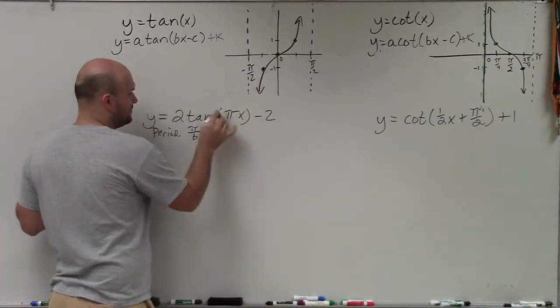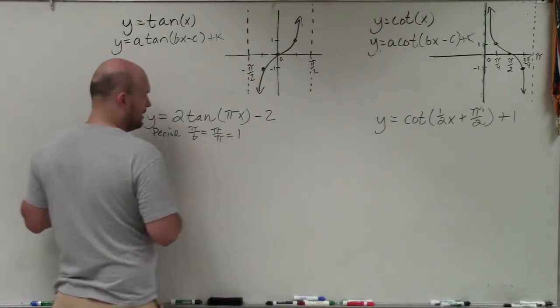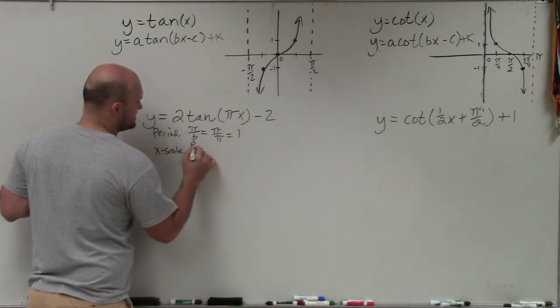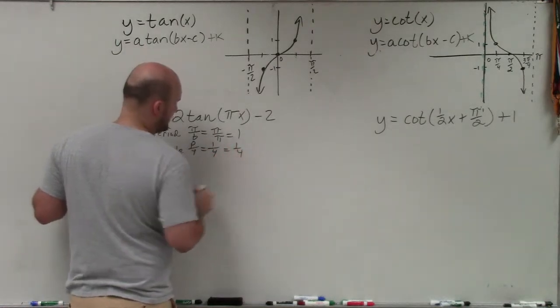So it's going to be π divided by b, which in this case is π over π, which is just equal to 1. Then my x scale is going to always be my period divided by 4. So I take 1 divided by 4, and I'm just left with 1/4.